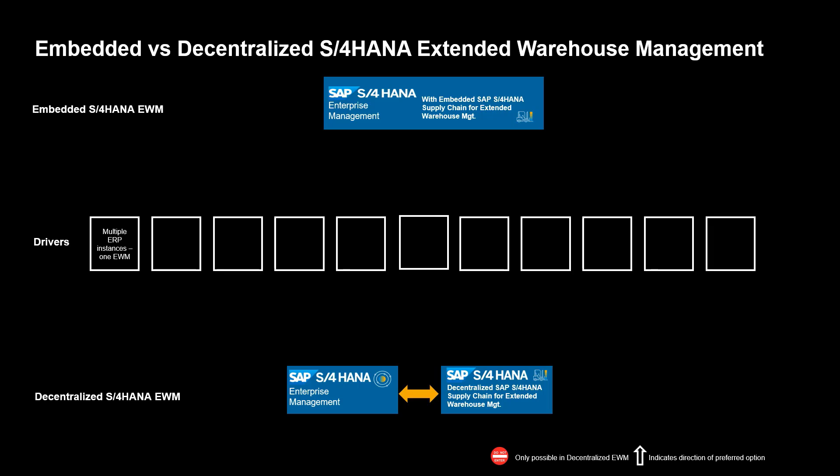Driver number one. If you have more than one ERP system — both SAP ERP or non-SAP ERP — and wanted to connect them to the same instance of EWM, decentralized would be your option. In fact, this cannot be done with embedded EWM, leaving you with no choice other than embracing the decentralized option.